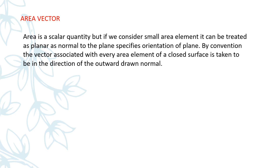Next is the area vector. As we know, area is a scalar quantity. But if we consider a small area element — a small portion of the area — it can be considered to be planar and it will have a particular orientation. By convention, the vector associated with every area element of a closed surface is taken to be in the direction of the outward drawn normal.